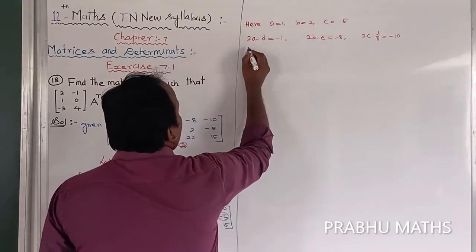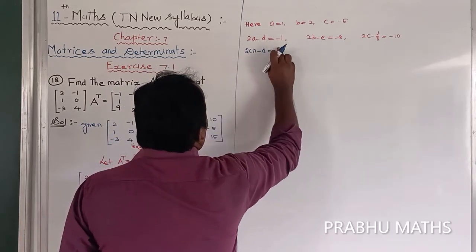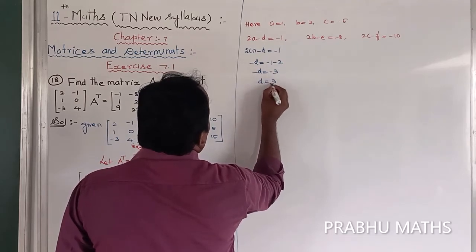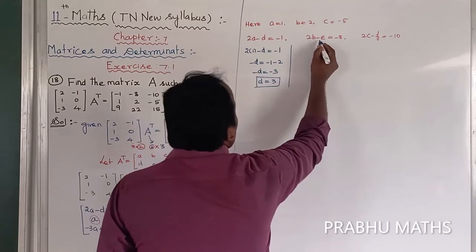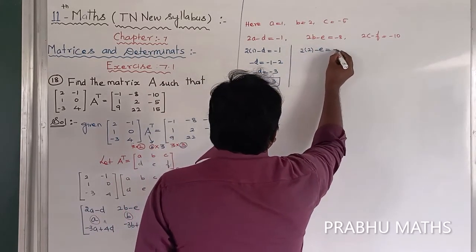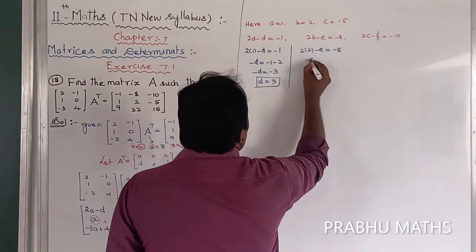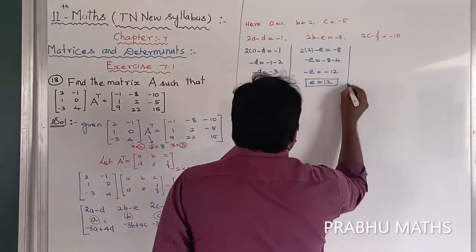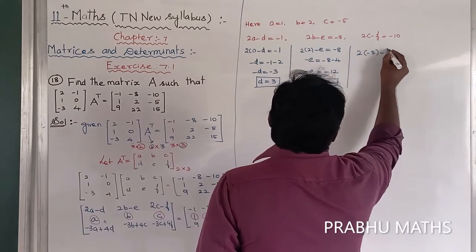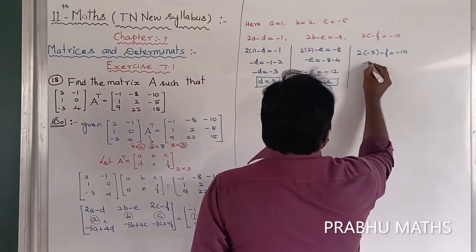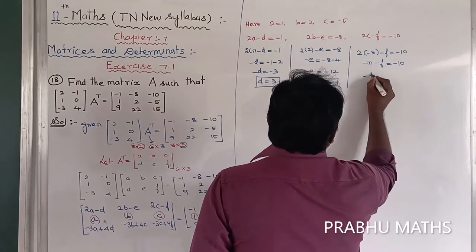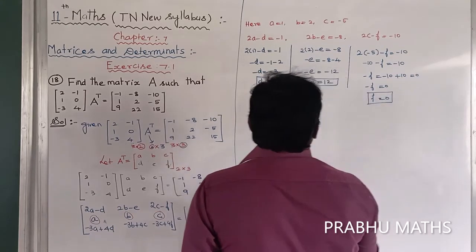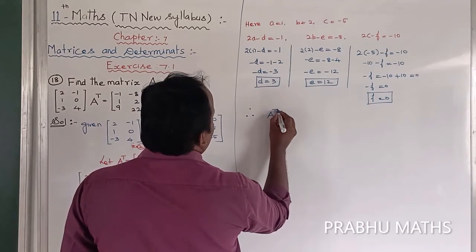Since A equals 1: 2×1 minus D equals -1, so minus D equals -3, therefore D equals 3. Since B equals 2: 2×2 minus E equals -8, so 4 minus E equals -8, minus E equals -12, therefore E equals 12. Since C equals -5: 2×(-5) minus F equals -10, so -10 minus F equals -10, therefore F equals 0.